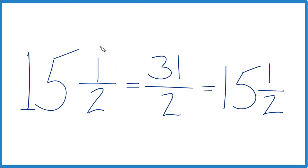Note that 15 and 1 half is equivalent to 31 halves. They have the same value — it's just that we're representing it here as an improper fraction, and this is our mixed number. This is Dr. B. Thanks for watching.